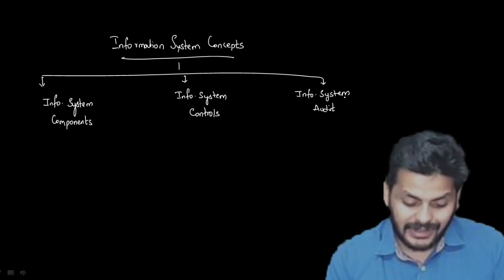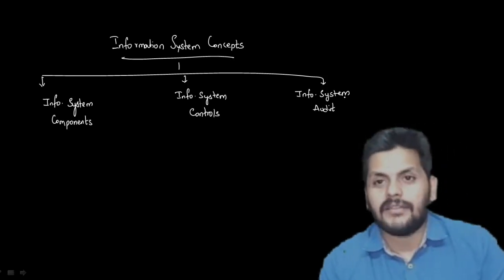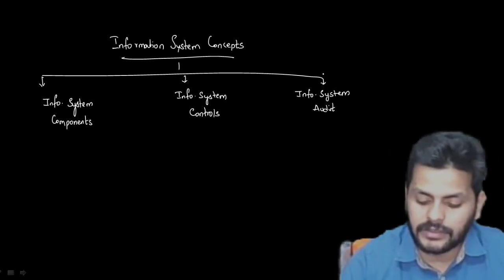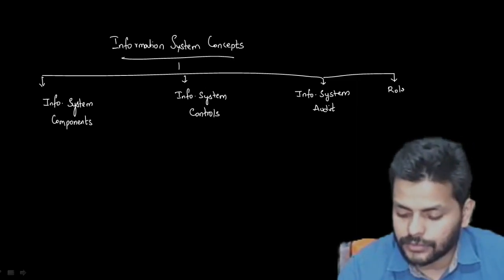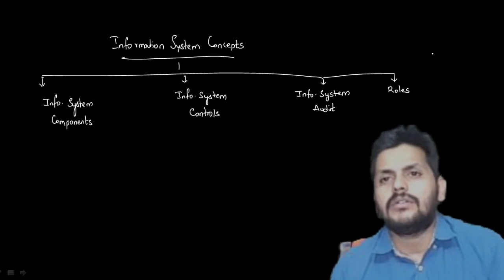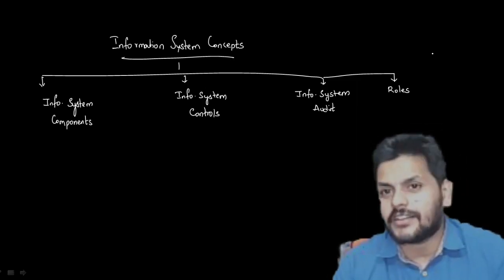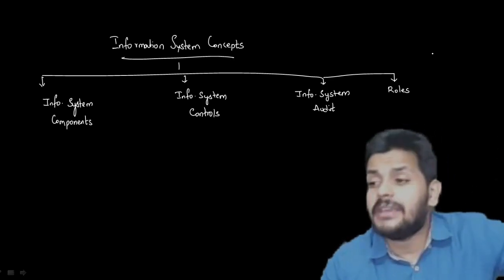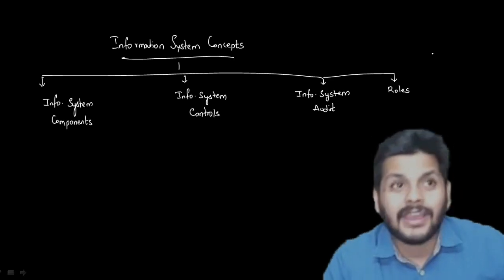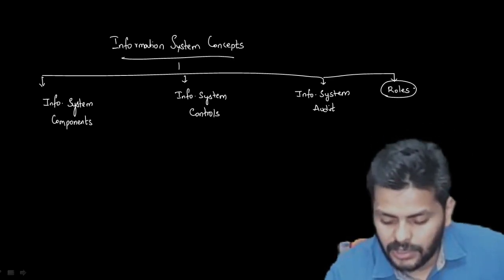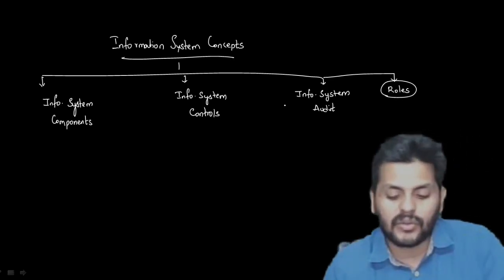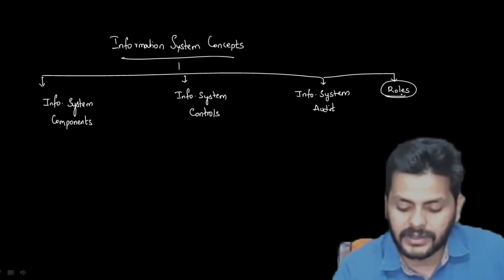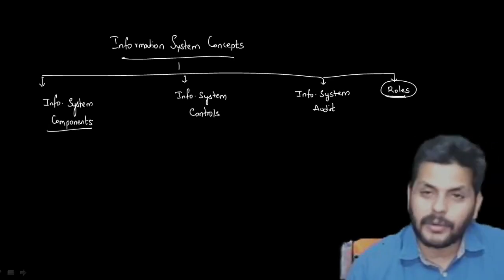There is one topic being given as homework: roles in an IT organization setup. Just like how we have a CEO and divisional managers, here we talk about a CIO (Chief Information Officer), a system analysis team, a DBA (Database Administrator), and a Network Administrator. What's more important in this topic is the set of components, then the controls, and then the audit and audit-related tools.